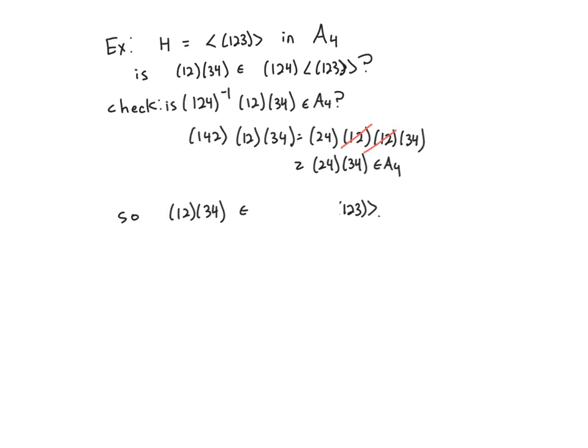There's a typo there — that should just be 1, 2, 4. This theorem lets you figure out membership in cosets without actually having to exhaustively list all of the elements.